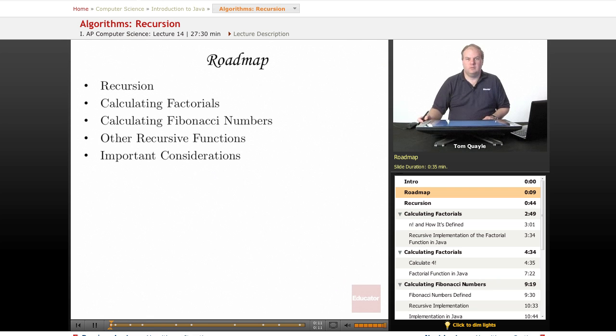We'll first talk about what recursion is and how it's useful to us in writing computer programs, and then we'll look at a couple of classic recursive algorithms, one that calculates factorial numbers and the other that calculates Fibonacci numbers. We'll then talk about other applications of recursion and the type of recursive questions that you might see on your AP Computer Science exam, and then we'll talk about some important considerations when using recursion or deciding whether to use recursion.